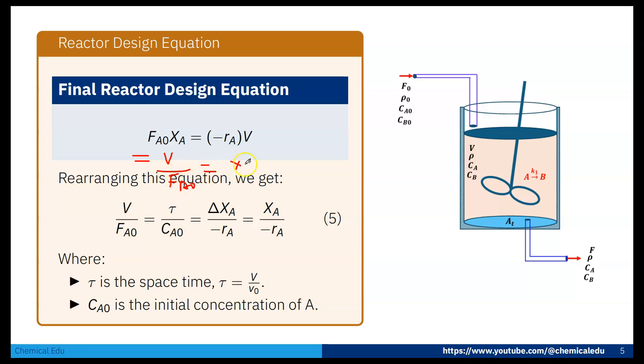Now if we rearrange, from here V/FA0, that will be XA/(-rA). V/FA0 is equal to XA/rA. The space time tau equals V/V0, and CA0 is the initial concentration of A. We can also write V/FA0 equals tau/CA0 equals XA/(-rA).